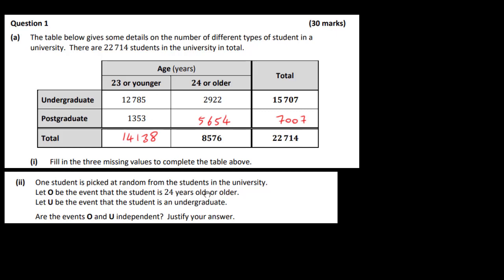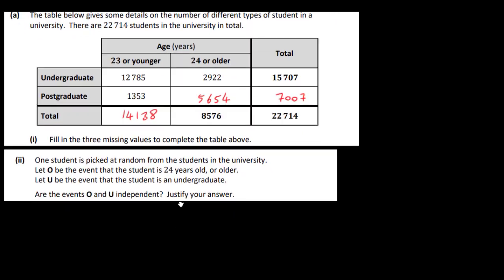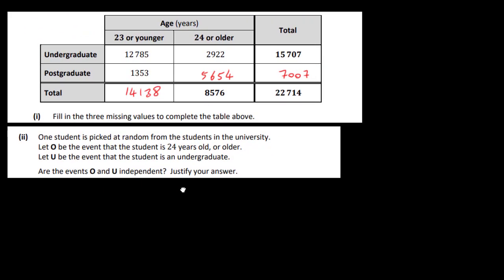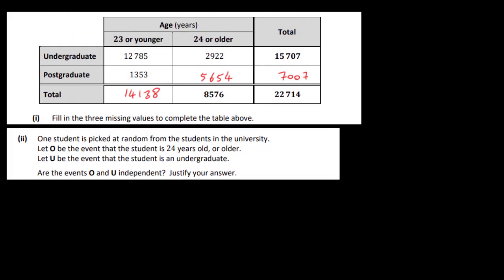One student is picked at random from the students in the university. Let O be the event that the student is 24 years or older, and U be the event that the student is an undergraduate. Are O and U independent? To prove independence, you need the probability of O multiplied by the probability of U to equal the probability of O intersection U.